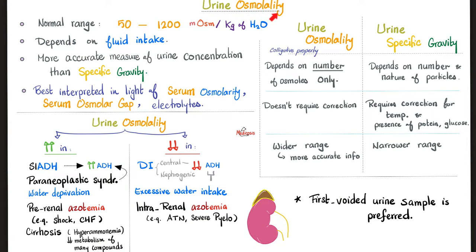In my previous video on urine osmolality, I told you that both osmolality and specific gravity are trying to measure the concentration of urine. Which one is better? Urine osmolality is better than urine specific gravity, for three reasons. Number one, urine osmolality cares only about the number of particles, but urine specific gravity cares about the number and the nature of particles. Urine osmolality does not need to be corrected for anything, but urine specific gravity requires correction for the temperature of the sample and the presence of proteins and/or glucose. Urine osmolality gives you a wider range, but urine specific gravity has a narrower range.